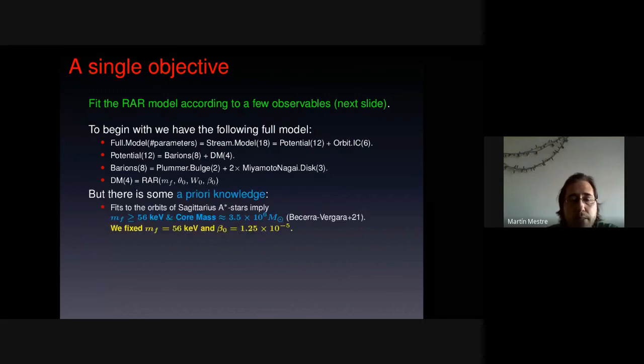Well, but how do we cope with these 18 parameters? Well, there is some a priori knowledge. There are fits to the Sagittarius A star's orbits, which imply that the fermion mass must be higher than 56 kilo electron volts, and that the core mass is approximately 3.5 times 10 to the 6 solar masses. So in this work, we set the fermion mass to 56 and beta zero to that value in order to have the given core mass.